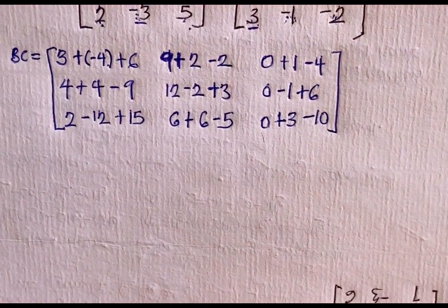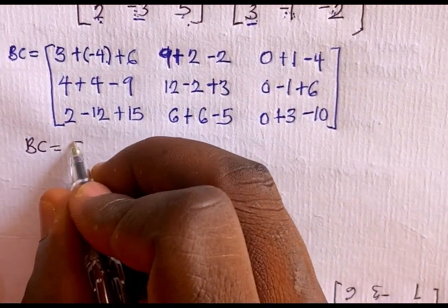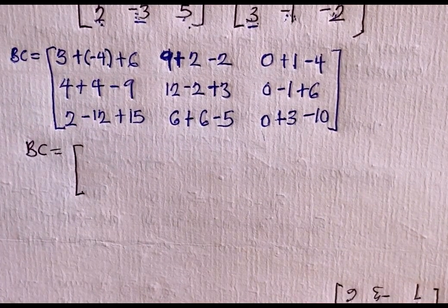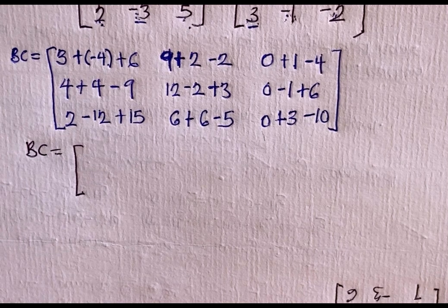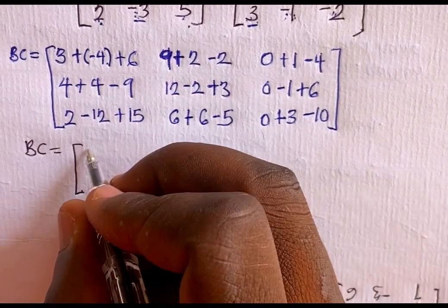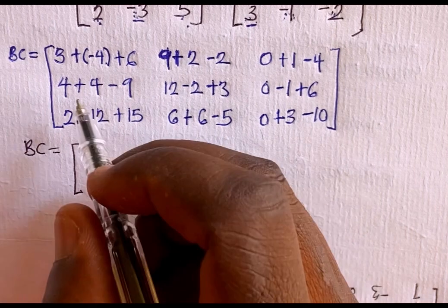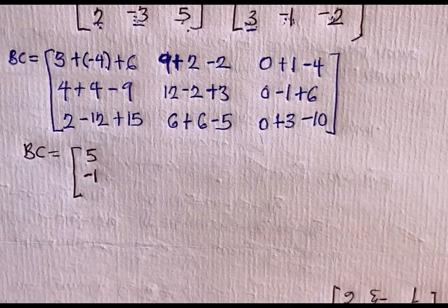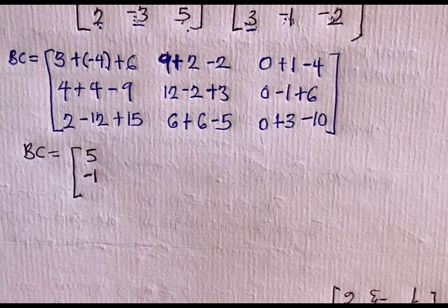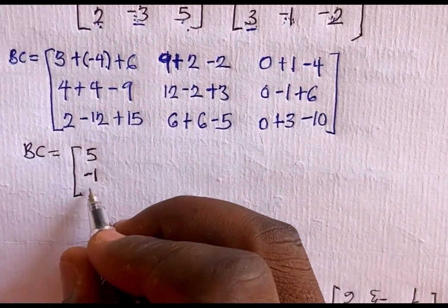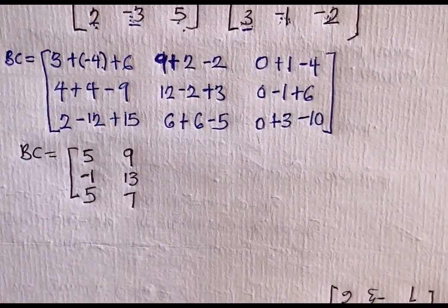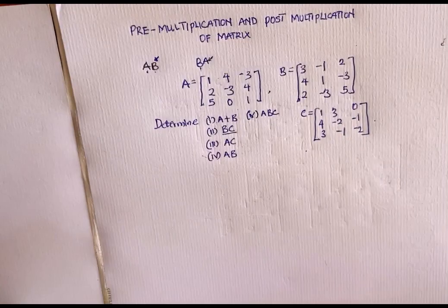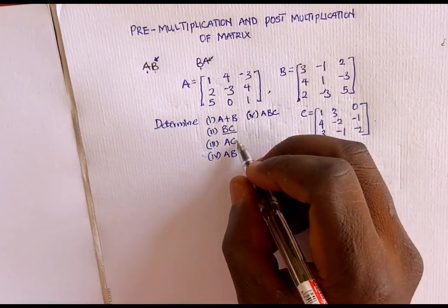Simplifying BC further, we have BC equal to: first entry 3 + (-4) + 6 = 5, next is -1, then 2 - 12 + 15 = 5. Let's move to the next question, which is AC. We are asked to find AC, so let's go ahead and find AC.